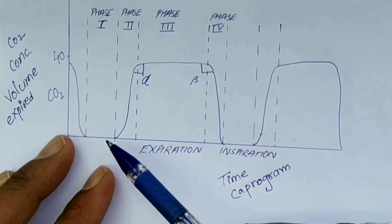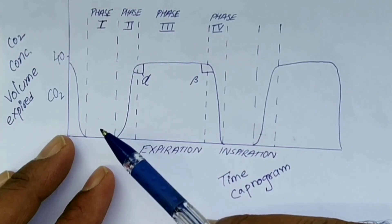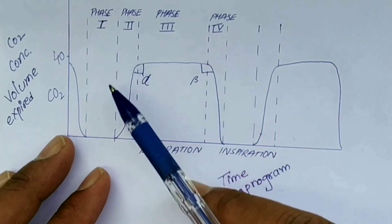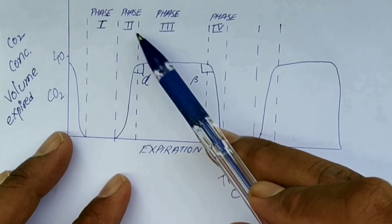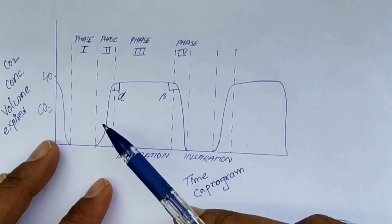Phase one: during this first portion of exhalation, anatomical dead space gas is exhaled and there is no CO2. Now let us come to phase two. As expiration continues, a short phase of capnogram is recognized in phase two with a rapid S-shaped upstroke on the trace due to mixing of dead space gases with alveolar gases.